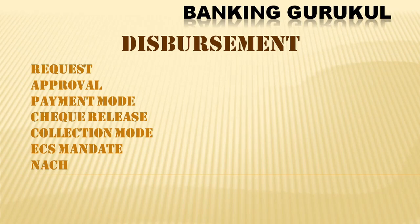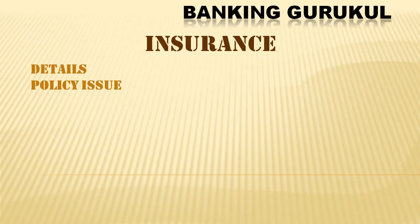Finally comes disbursement — the actual amount is transferred to the customer's account. The process includes a disbursement request, branch or regional office approval, and selection of payment mode: cheque, DD, NEFT, or RTGS. After release, repayment mode is set up — ECS mandate, collection mode, or post-dated cheques. Any insurance linked to the property is also captured: policy details, insurance amount, sum assured, and premium.